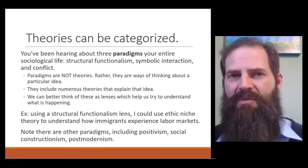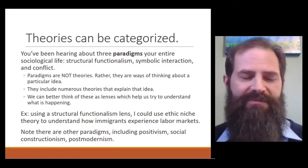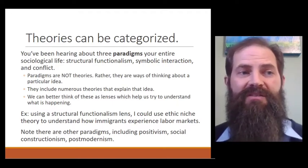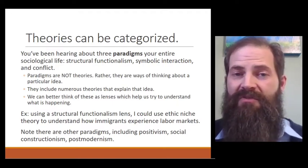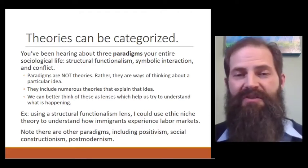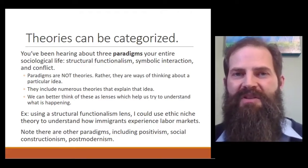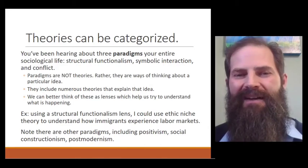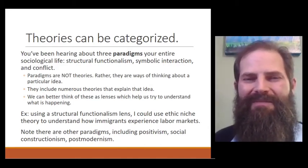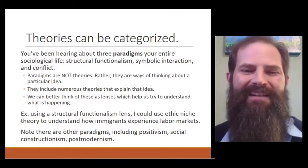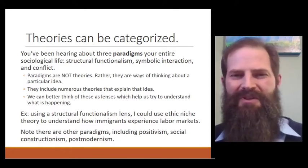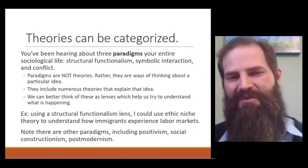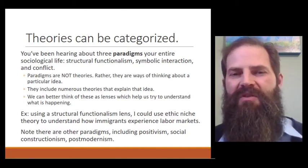With ethnic niches, it's definitely the story of how groups are experiencing structures in our society. That falls into a structural functionalism category because we'd be thinking about how all these different systems in our society interact. We can see how for immigrants it would explain how they interact. It also gives us a good mezzo theory, as we talked about in our previous lecture, because we're talking about how groups interact. We're not using a 'structural functionalism theory'—it's a basket or lens or paradigm—but we're using a specific theory that falls in that category.